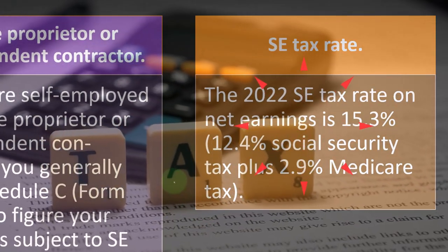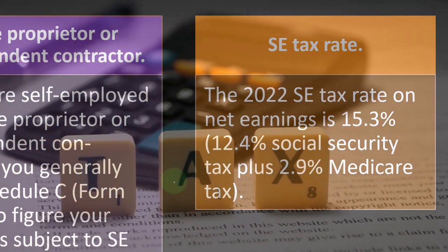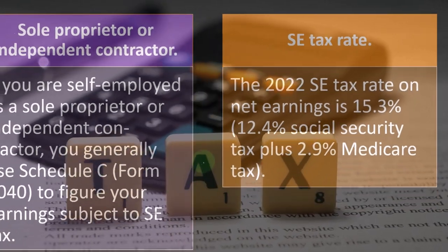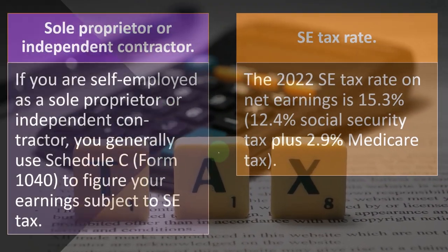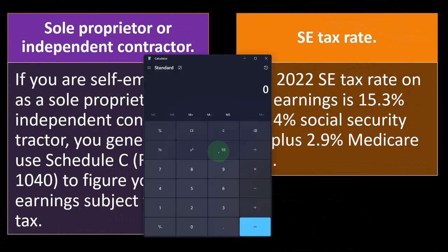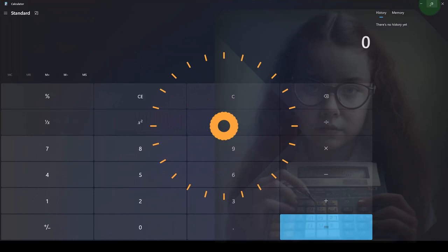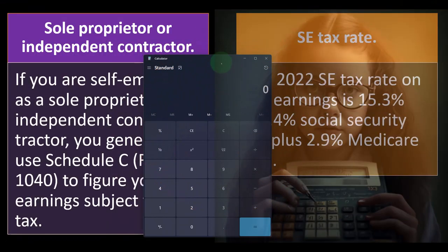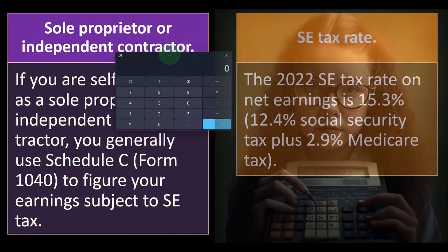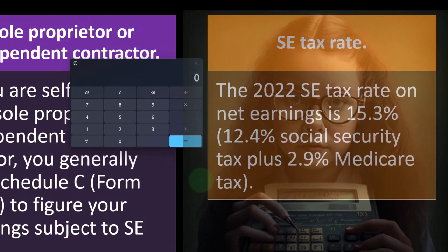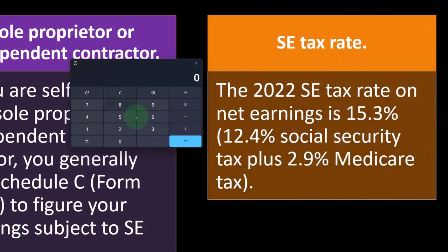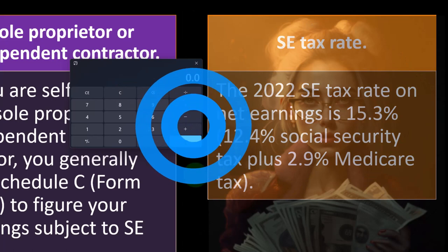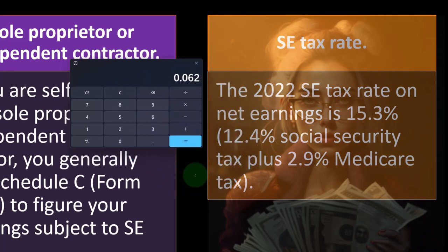The 2022 SE tax rate on net earnings is 15.3%: 12.4% Social Security tax and 2.9% Medicare tax. If you look at a W-2 pay stub, the Social Security rate is 0.062 for the employee; double that is 12.4%, representing both the employer and employee portion. Similarly, the Medicare employee rate is 0.0145; times two equals 2.9%. Adding 12.4% plus 2.9% equals the total 15.3% self-employment tax rate.